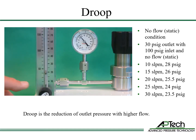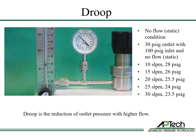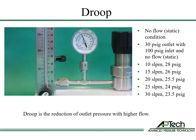As flow increases to 15 liters per minute, the outlet pressure drops to 26 psi. And at 30 liters per minute, the outlet pressure further drops to 23.5 psi. This reduction in outlet pressure with higher flow is called droop.